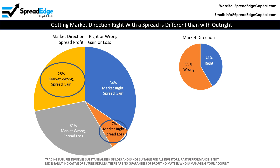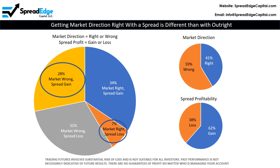Looking at this another way: we got the market direction correct just 41% of the time. Note also that the spread won 62% of the time. Either way you look at it, we see the same 21-point advantage between spread profitability and market direction.